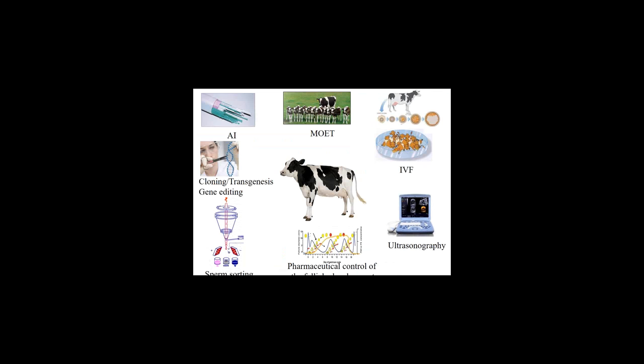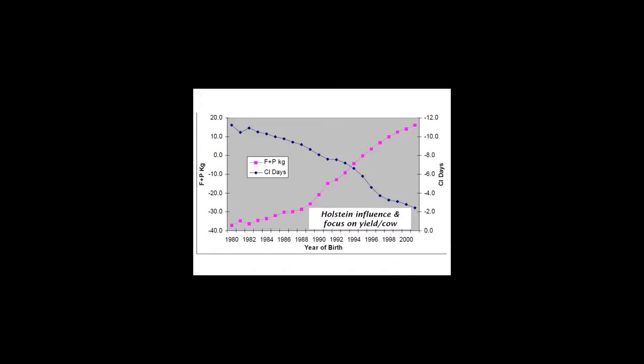On the male side, it's now possible to sort semen into X or Y-bearing spermatozoa, predetermining the sex of the offspring at the time of insemination. Lastly, there are now technologies available — especially gene editing — which allow targeted alterations in the genome of animals. This graph shows the antagonistic relationship between milk yield and fertility: the pink line shows the increase in milk yield from 1980 to 2000 due to intensive selection, while the blue line illustrates the decrease in fertility associated with that increase, measured here in terms of calving interval.